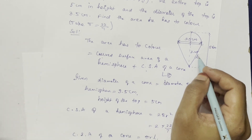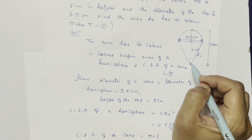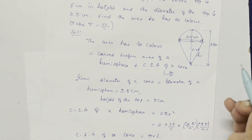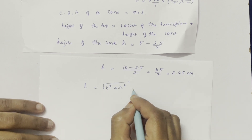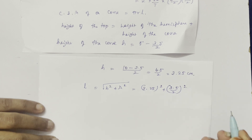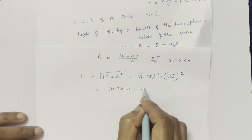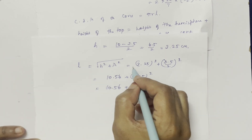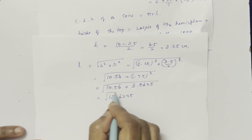Using the right triangle relationship: L is the square root of h squared plus r squared. Slant length L equals √(h² + r²). Height h is 3.25 cm and r is 3.5 by 2 equals 1.75 cm. So L equals √(3.25² + 1.75²) equals √(10.5625 + 3.0625) equals √13.625.